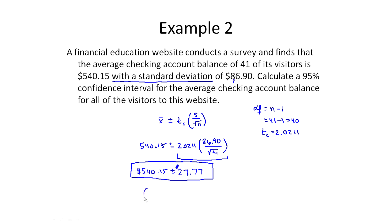So if I was to do that addition and subtraction, I would do 540.15 minus 27.77, and I get 512.38, comma, and then I could also do the 540.15 plus the 27.77, and I get 567.92.